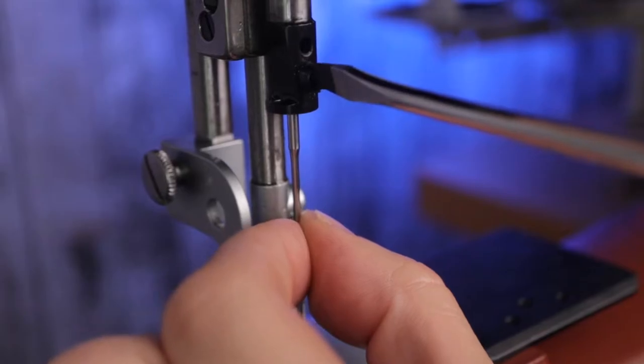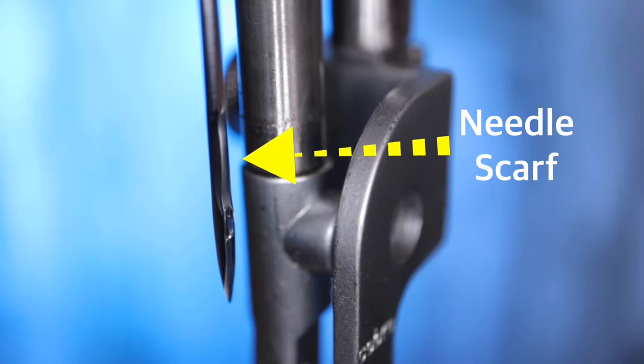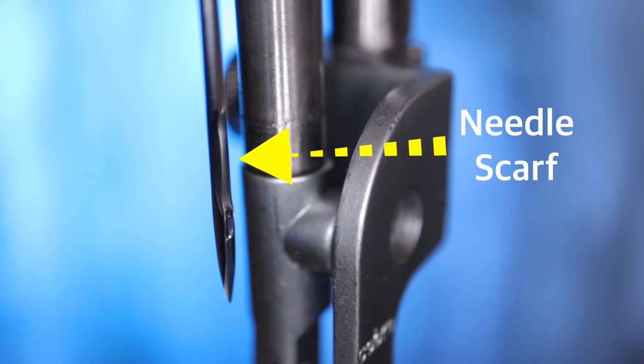The position of loading a new needle into the needle bar is critical for the operation of the machine. Be sure to insert the needle with the scarf facing to the right.